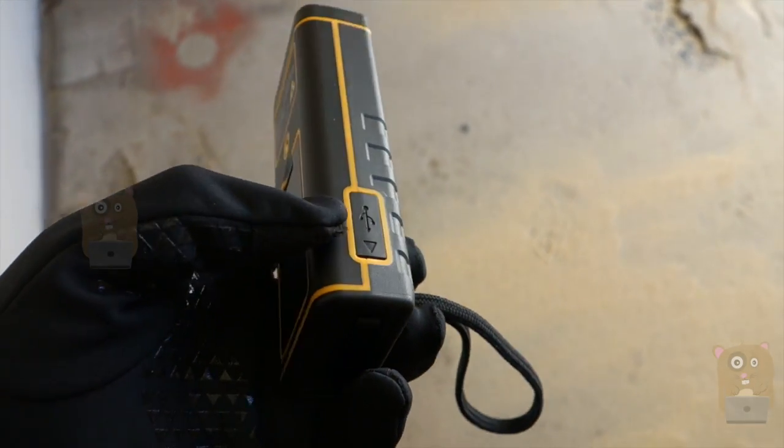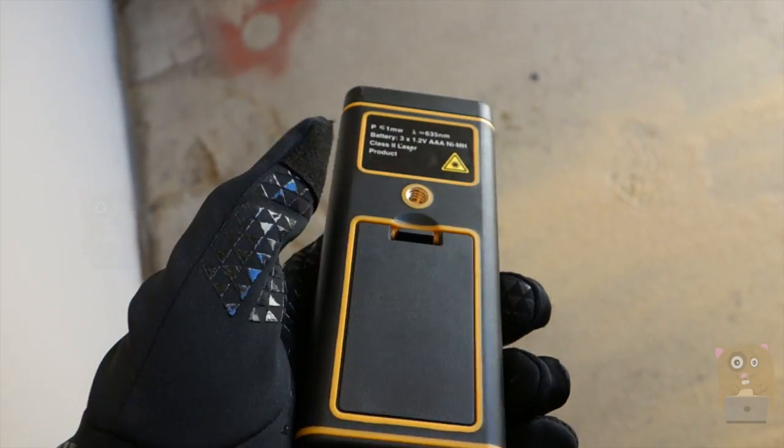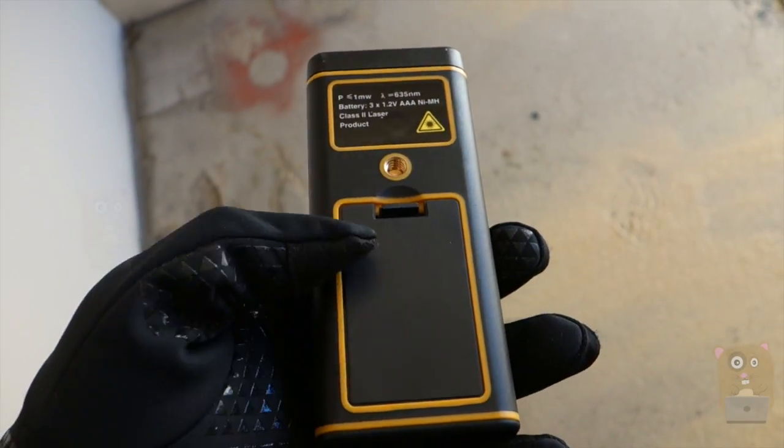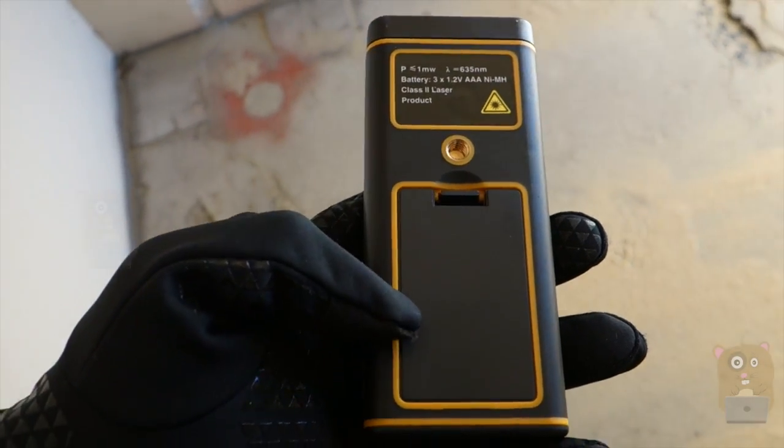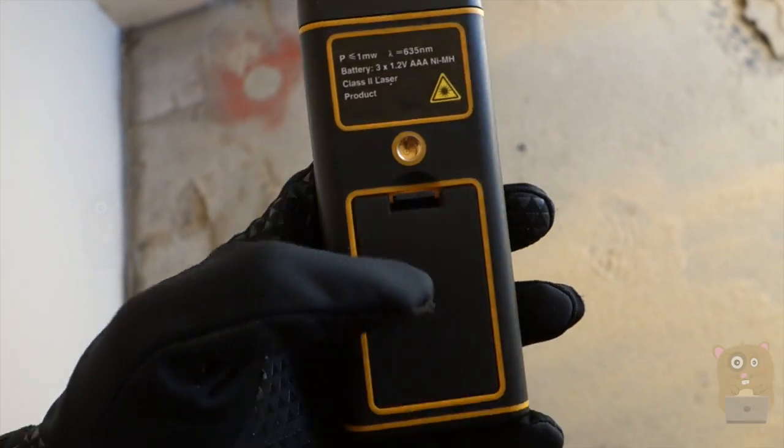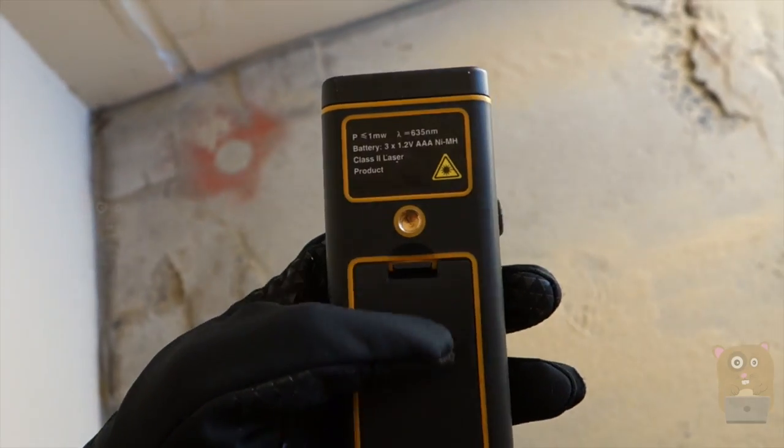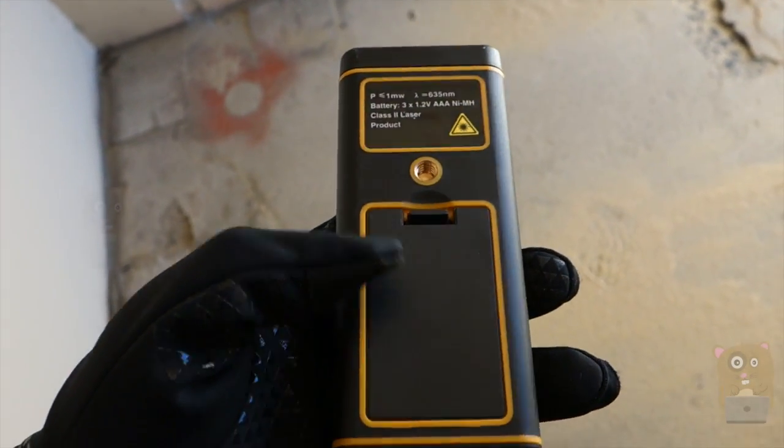On this side we have a micro USB port, and on the back we have a tripod thread as well as a battery compartment for three AAA rechargeable batteries. And it did come with rechargeable batteries in the box as well as a micro USB cable and the AC adapter too.